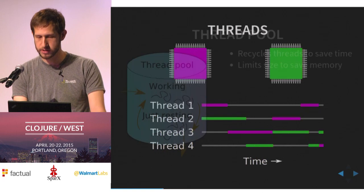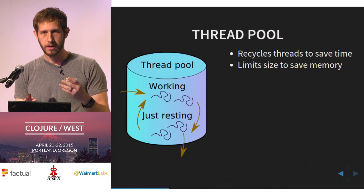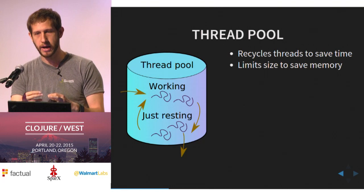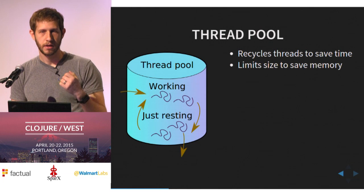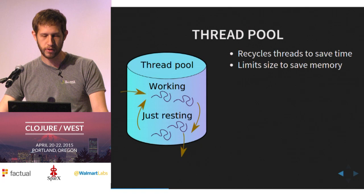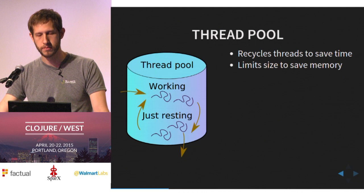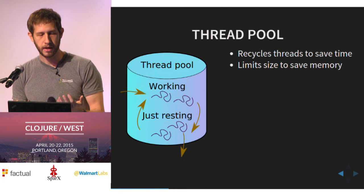Threads have overhead of two types. One is memory: each thread needs a certain amount of memory allocated to its stack — it needs to know what data each function is working on and the sequence of function calls so it can return correctly. So we don't want too many threads or they'll use up all our RAM. Also, threads take time to start — tens of microseconds was the benchmark I saw. You don't want to be creating threads constantly. To amortize those costs, there's a common pattern called the thread pool: we recycle threads. When we need a new one, we check the pool; if one's available, we use it; if not, we get a new one. When done, we put it back. If it's been sitting around too long, we throw it out to save memory.